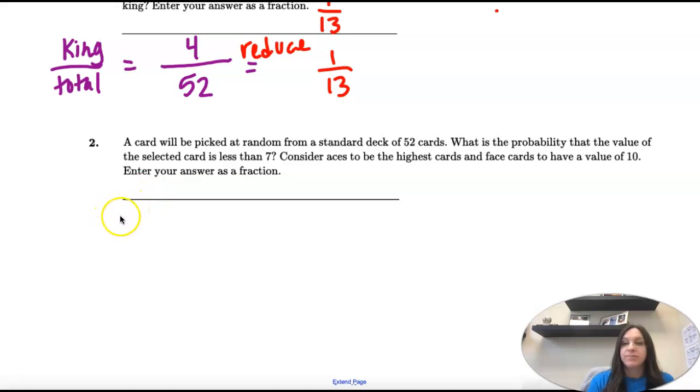Enter your answer as a fraction. Okay, so we're looking for cards less than seven. That's what's going to go on top of our fraction: how many are less than seven over our total, which is 52.